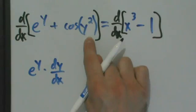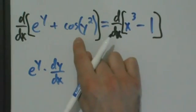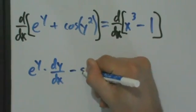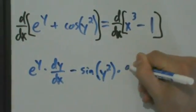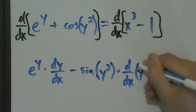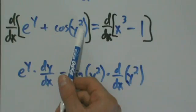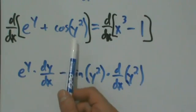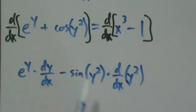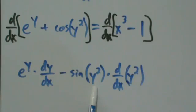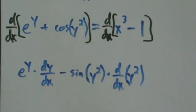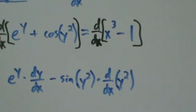For the second term, cosine of y squared, we're going to have to use the chain rule twice. The derivative of cosine of y squared is going to be minus sine of y squared times the derivative of y squared. Remember, y is implicitly a function of x, then we square it, then take the cosine — there are really three functions nested inside each other. Chain rule gives us minus sine of y squared times d/dx of y squared.